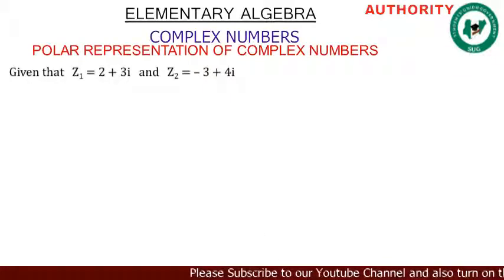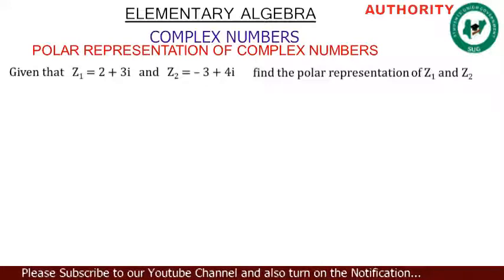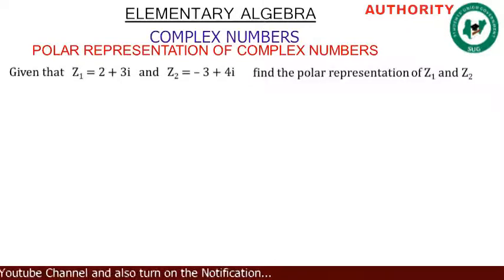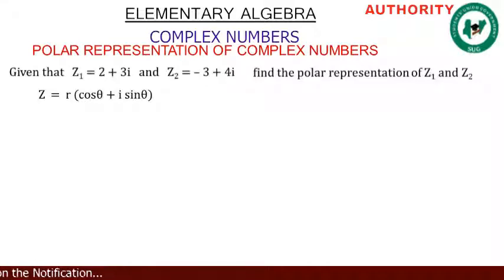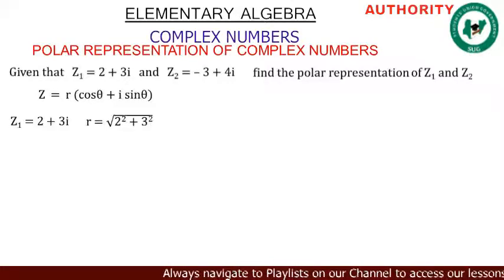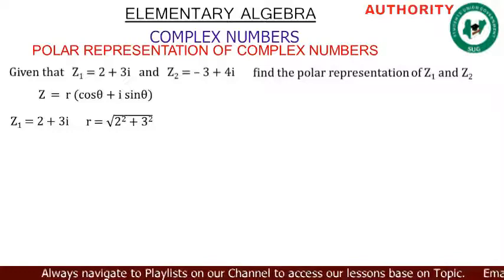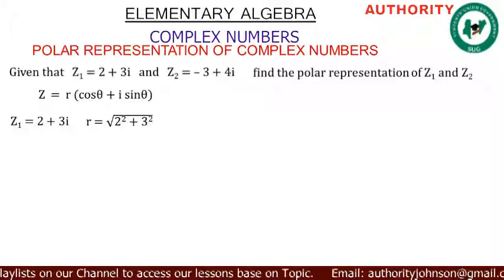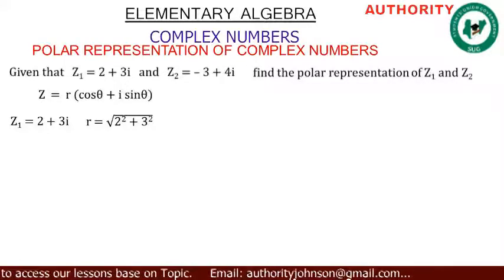Given z₁ equals 2 + 3i and z₂ equals −3 + 4i, find the polar representation of z₁ and z₂. From the polar form z equals r(cos θ + i·sin θ), we need r and θ. We recall that r is the modulus, and we have treated how to find the argument and modulus in a previous lesson.